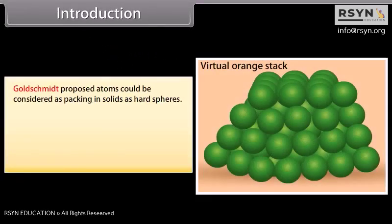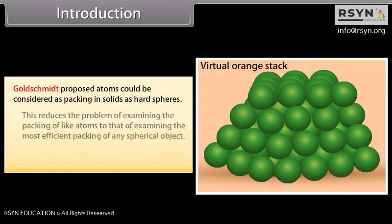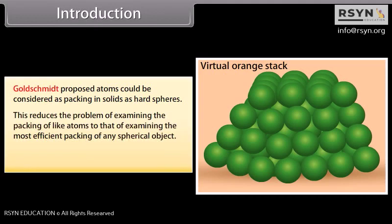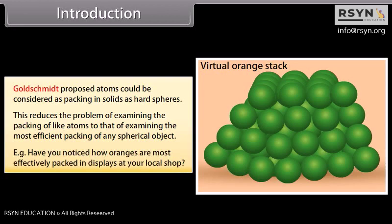Goldschmidt proposed that atoms could be considered as packing in solids as hard spheres. This reduces the problem of examining the packing of like atoms to that of examining the most efficient packing of any spherical object. For example, have you noticed how oranges are most effectively packed in displays at your local shop?